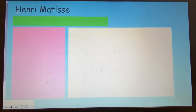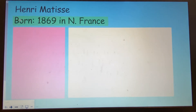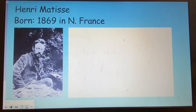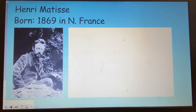He was born in 1869 in northern France, which is around the time when Queen Victoria was alive. As a young man, he studied law. Unfortunately, when he was about 22, he fell ill, so to pass the time he took up painting and he really enjoyed it. He decided that was what he wanted to do instead of working in law, so he became a painter.